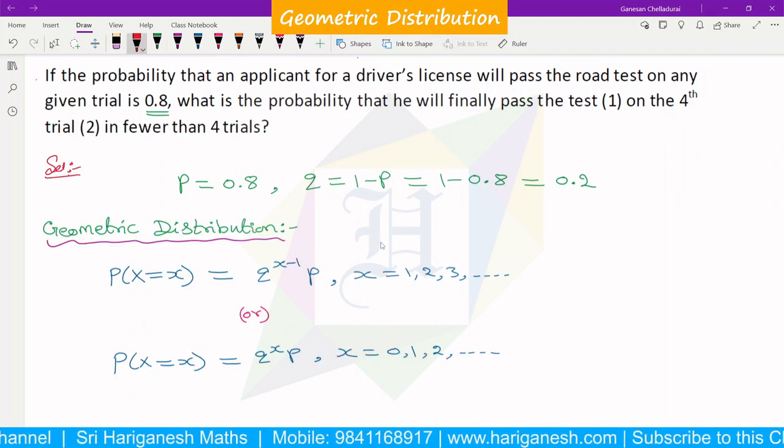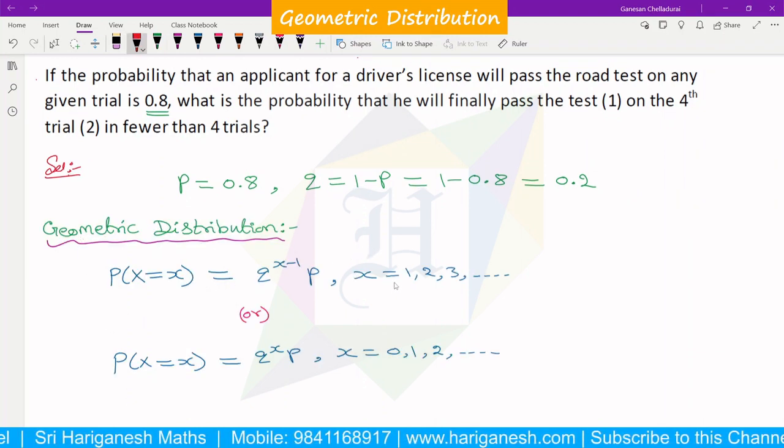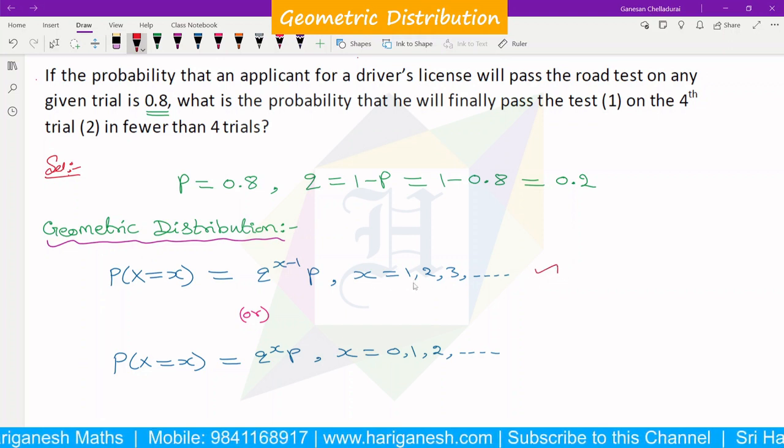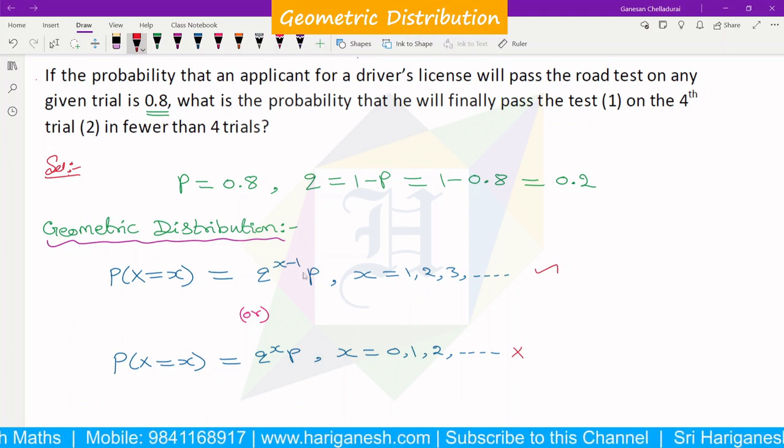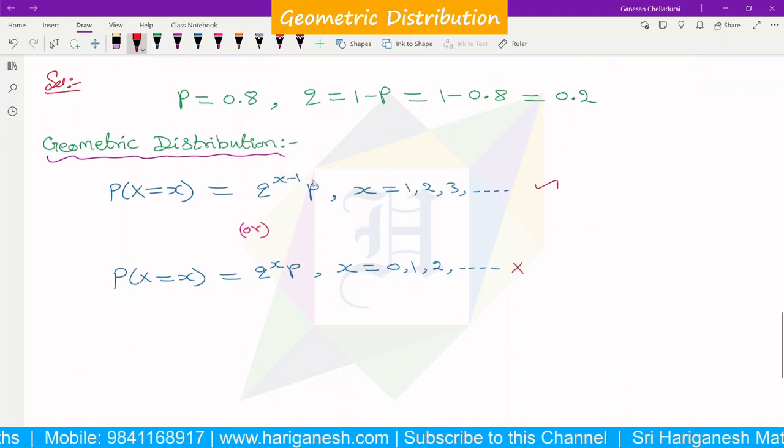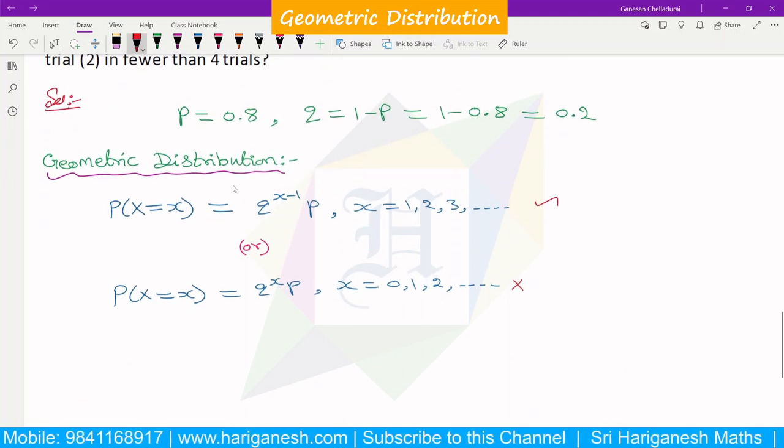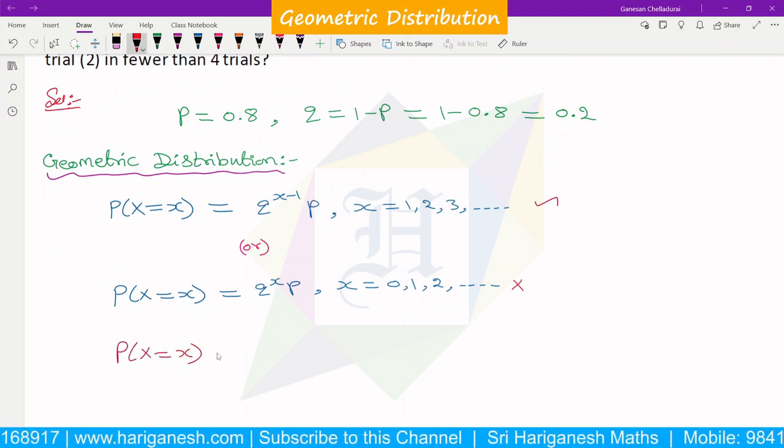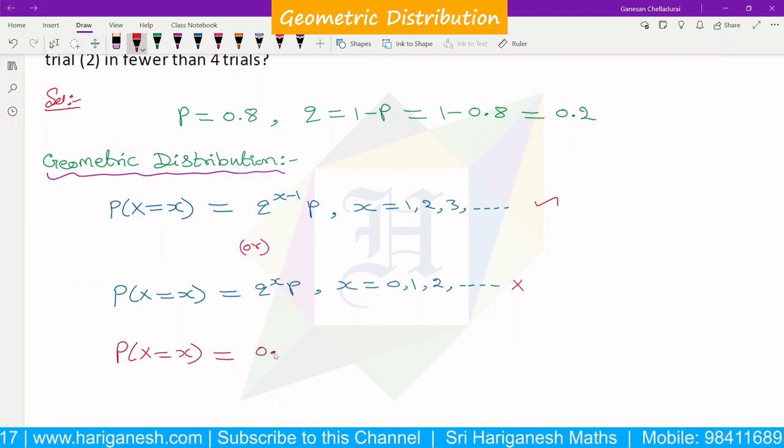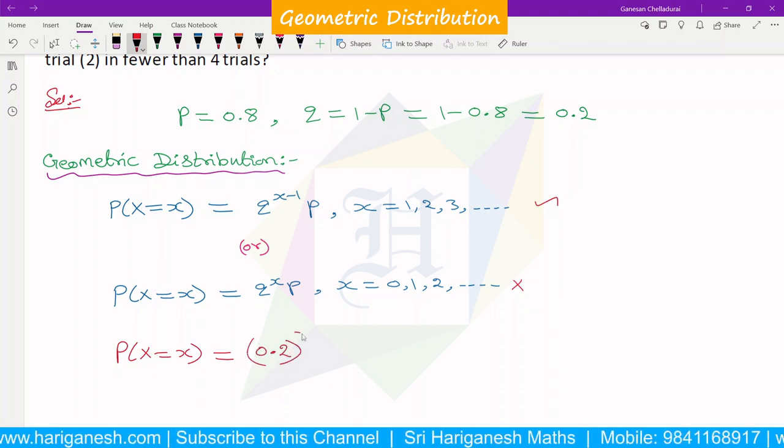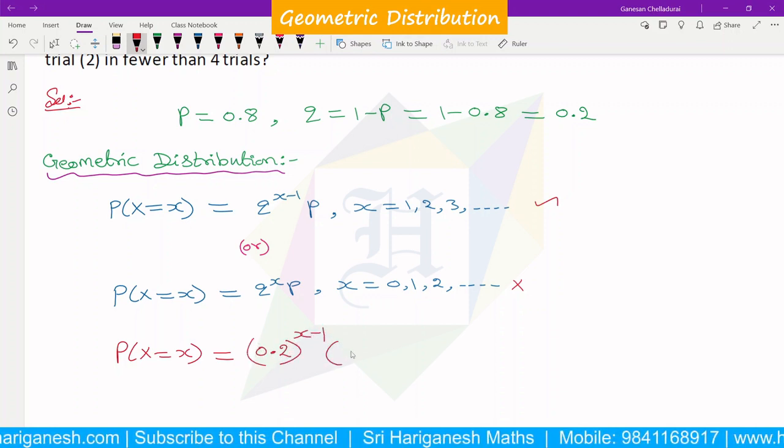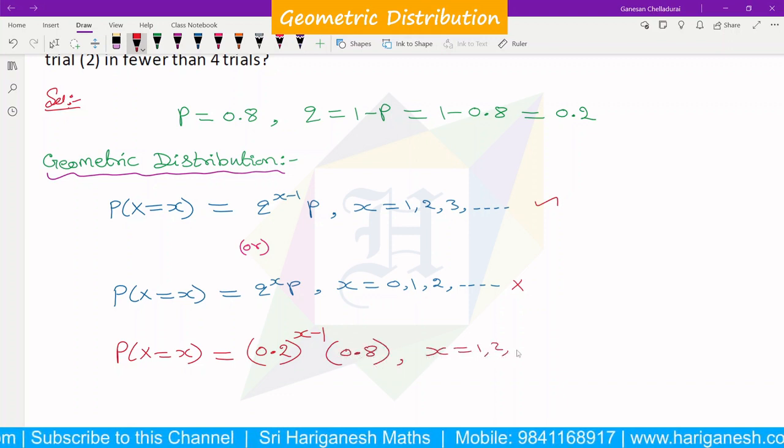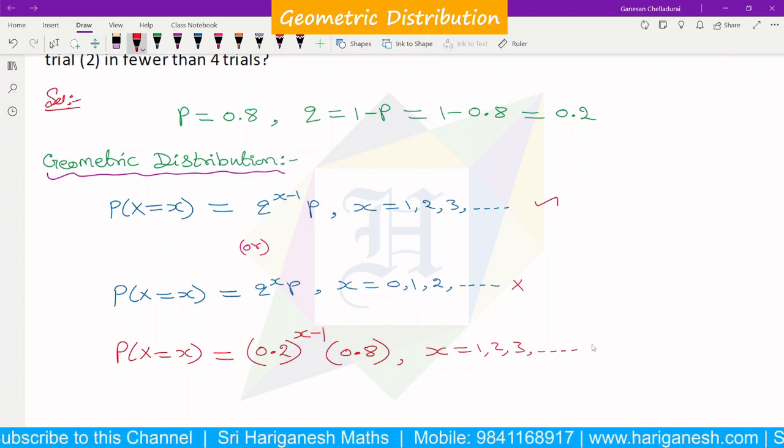So, if you look at the geometric distribution, we will have P(x=x) equals g to the power x-1 times p, where x equals 1, 2, 3, and so on. So, for the first question, he will pass the test on fourth trial.